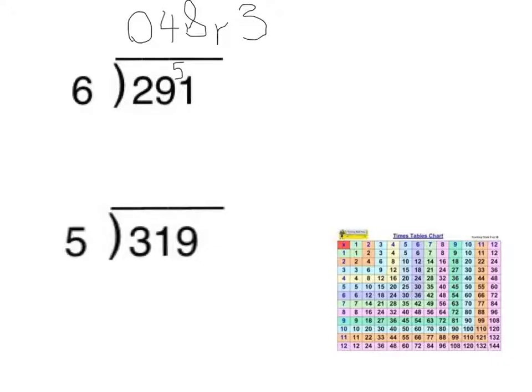So if I have a look at my timestable chart, find my 5 timestables, and I'm looking for the number closest to 31 without going over. And I can see that that number there is 30. 5 times 6 is 30.